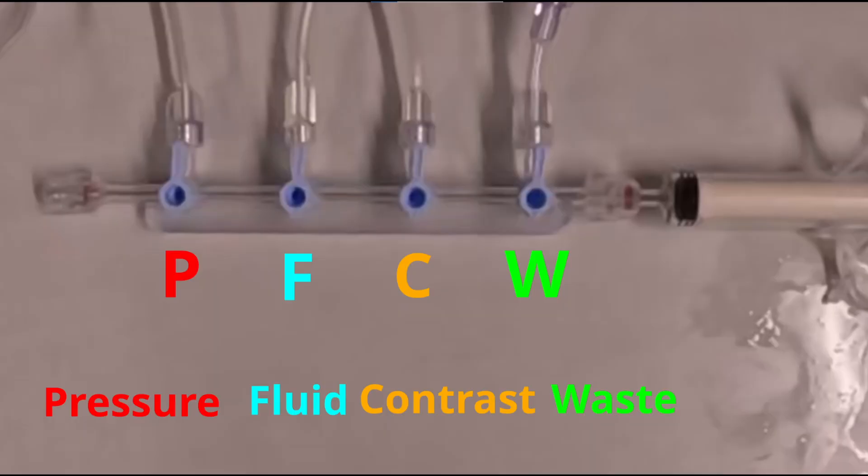This is the standard configuration for a four-port manifold. The first port is pressure, the second port fluid, the third port contrast, and the fourth port waste.